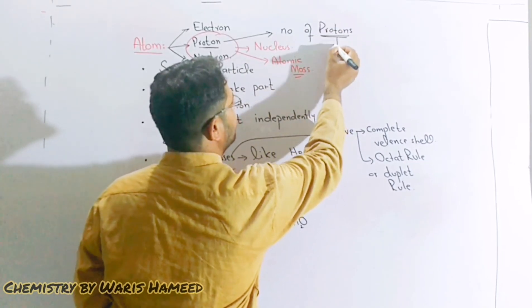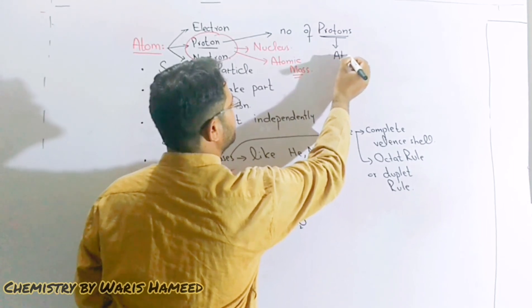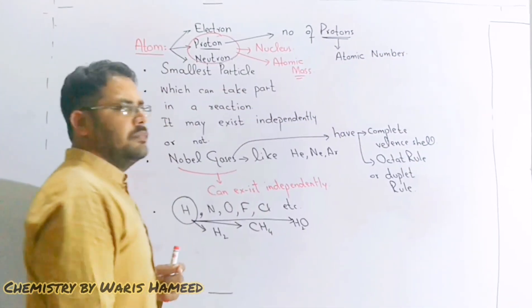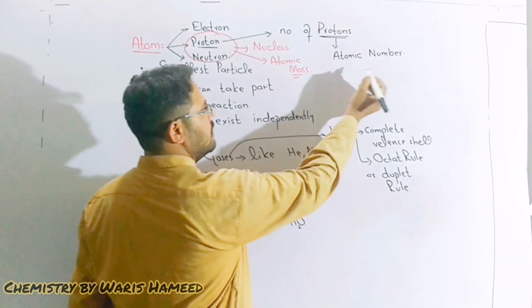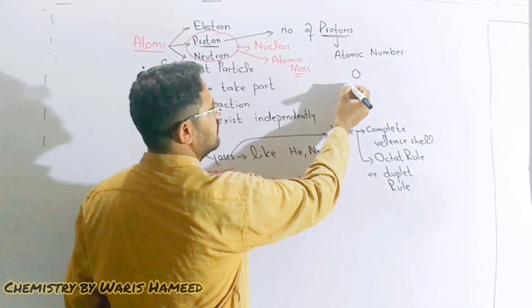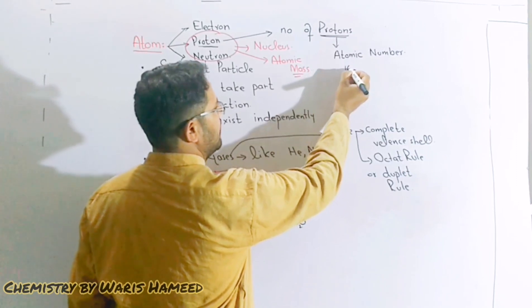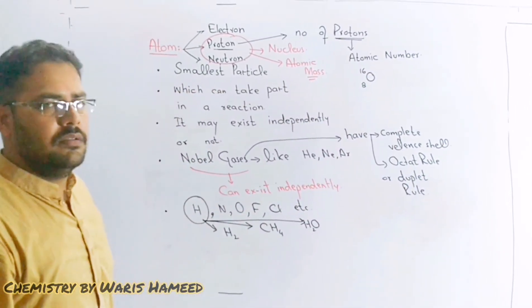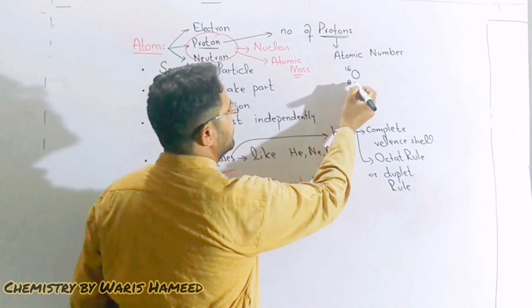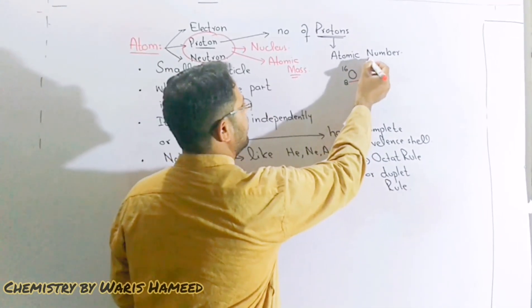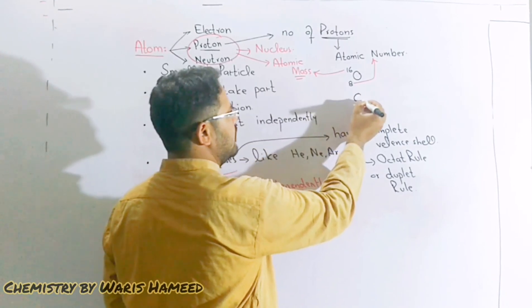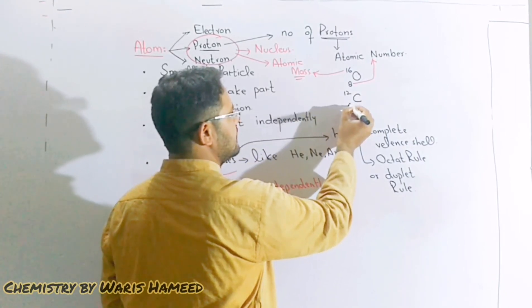Number of protons are atomic number. For example in case of oxygen, oxygen has 16 atomic mass and 8 atomic number. So this is the atomic number and this is the atomic mass of oxygen. Another example like carbon, it has 12 atomic mass and 6 atomic number.